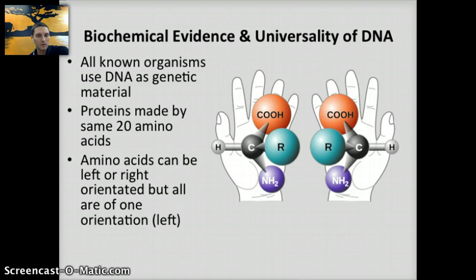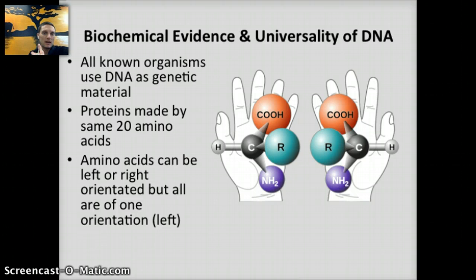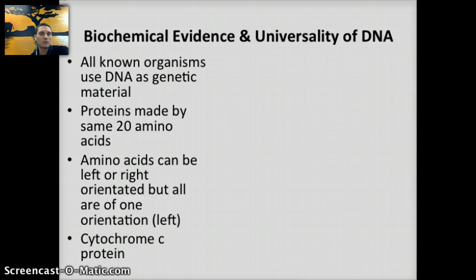In chemistry, we can talk about isomers — the structural arrangement of these molecules. Although amino acids can be both left and right oriented, they are all actually of the left orientation. One hypothesis suggests these left-handed isomers were found in meteorites that have crashed on Earth, from which amino acids have been extracted. A good example of evidence that DNA is shared among all living organisms is found in the cytochrome C protein.